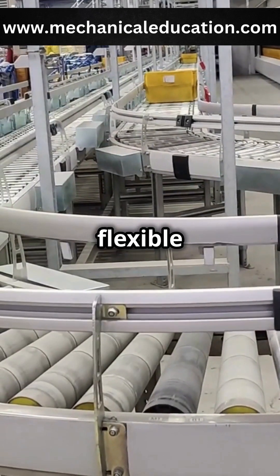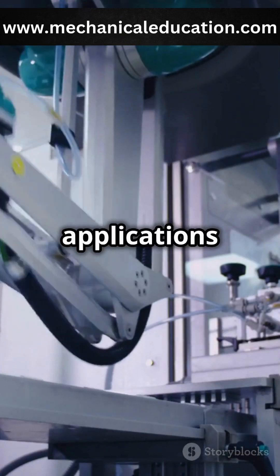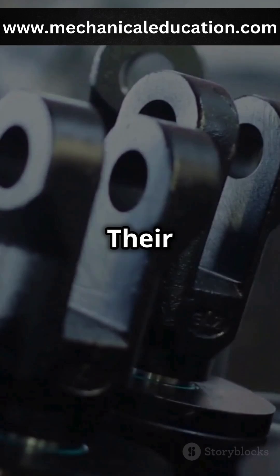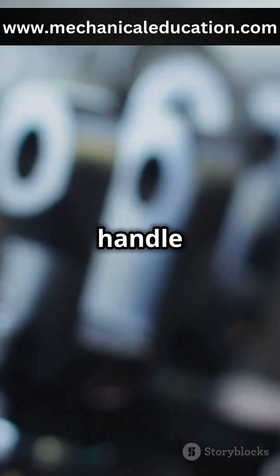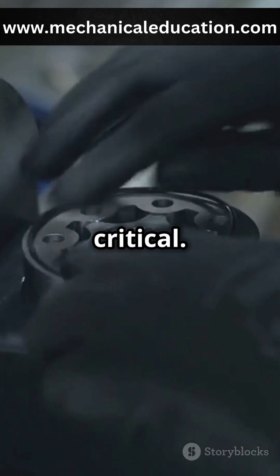First, we have flexible links. These links can bend or deform, making them ideal for applications requiring dynamic motion, like conveyor belts or robotic arms. Their ability to absorb shocks and handle misalignments is a big plus, but they're not ideal when precision is critical.